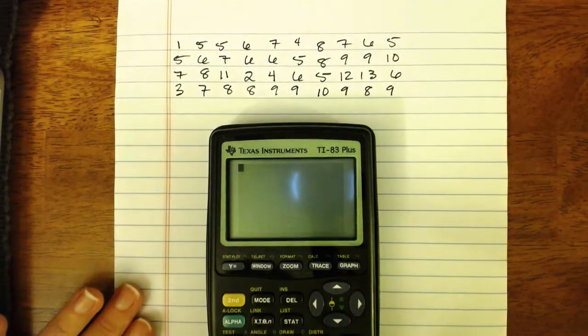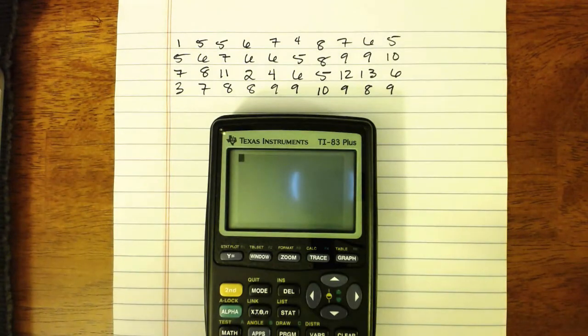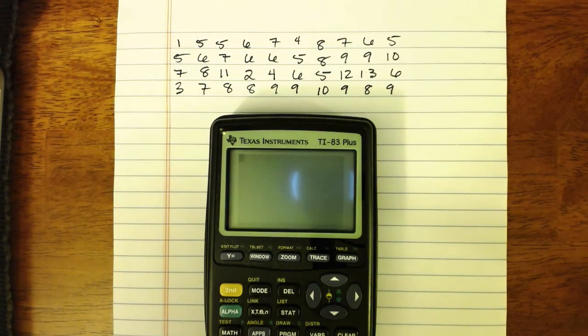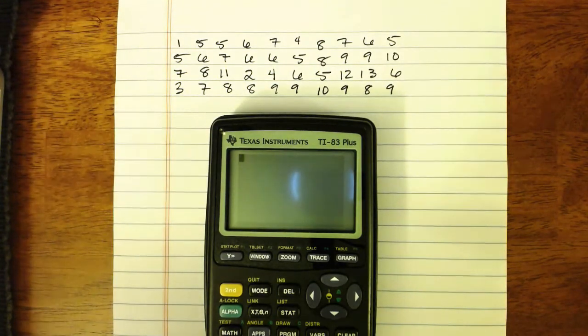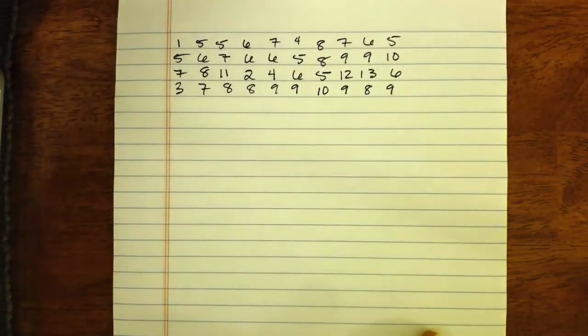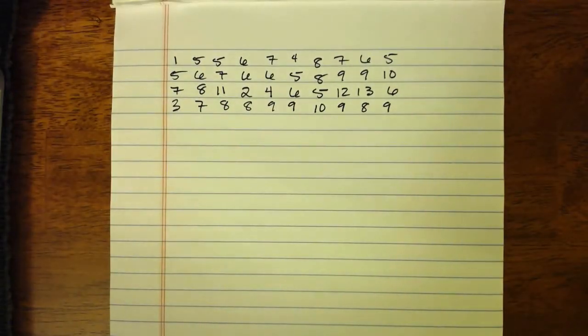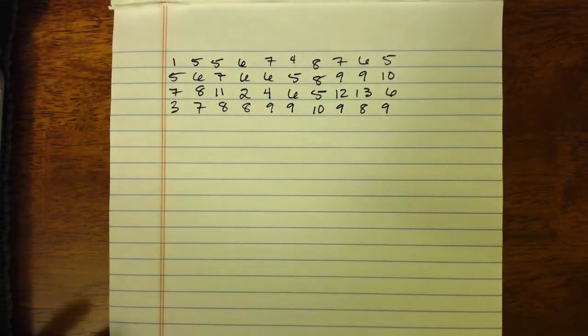Now when you're making your histogram in your calculator it is important that you've already made a frequency table because some of the information from the frequency table we will actually need to create the histogram. So for this set of data that we're dealing with right here, let's say that we wanted to use five classes.